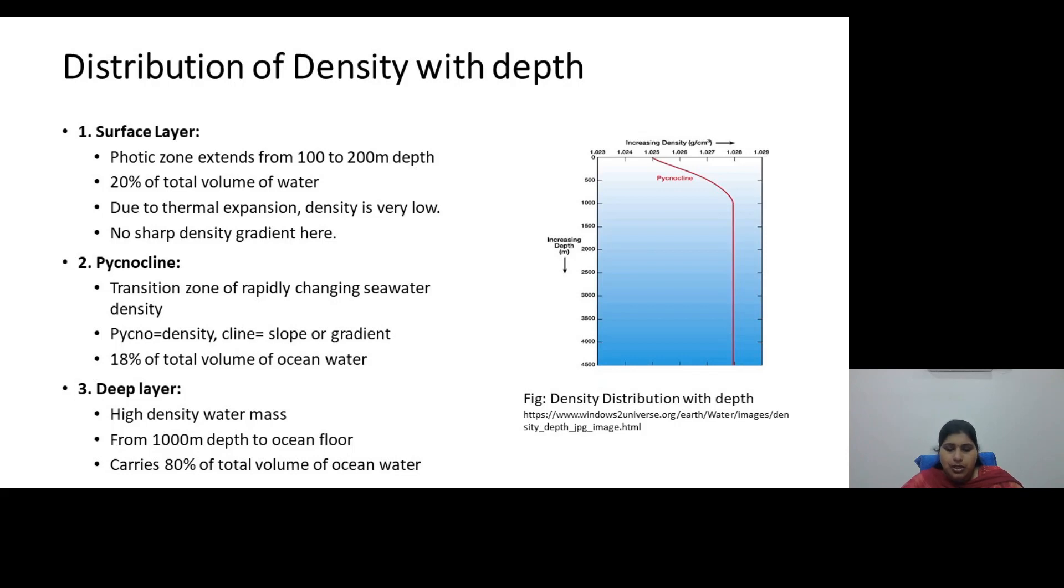So student, this was what I had to tell you about the variation of density with depth. And in this video we have studied about the factors that affect the density of ocean water, how ocean water is denser than fresh water, and we have also seen the variation of density with depth in oceans. Hope you all have learned something from it. Thank you.